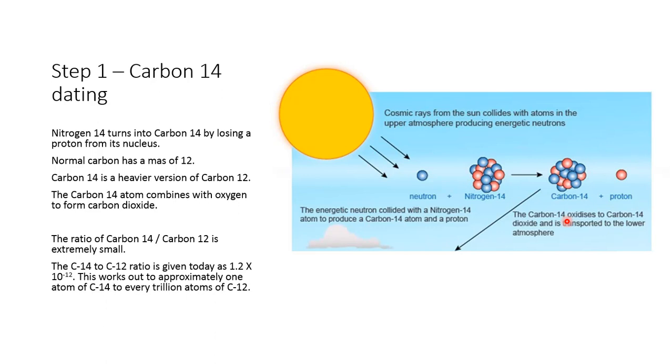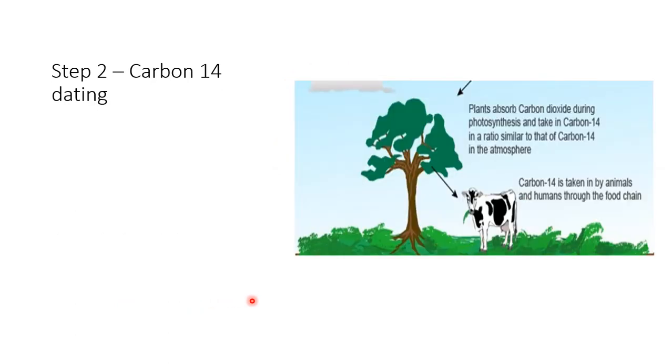The C14 to C12 ratio is given today as 1.2 times 10 to the negative 12, a very small number. This works out to approximately one atom of C14 to every trillion atoms of C12. So again, the amount of C14 in the atmosphere is very, very small. Moving on, next step.